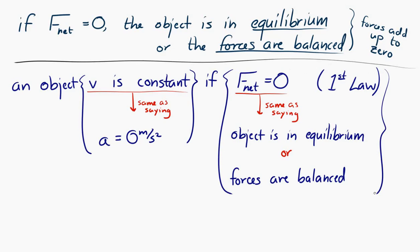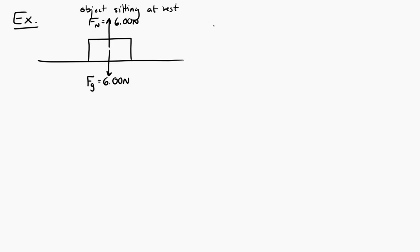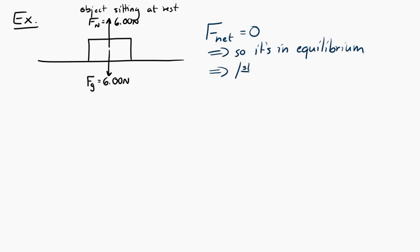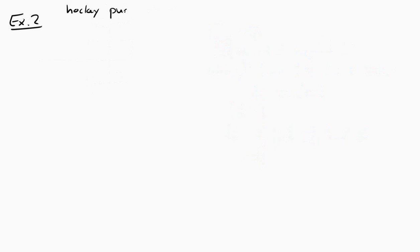For example, consider an object sitting on a table with a normal force of six newtons up and a gravitational force of six newtons down. That object is in equilibrium — the net force is zero, so its velocity will be constant. Of course, its velocity is zero and nothing will change unless some other force comes along and causes a net force to act upon it.